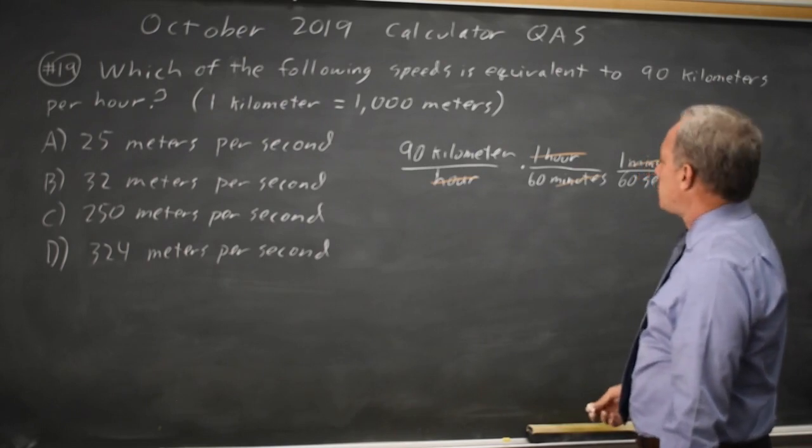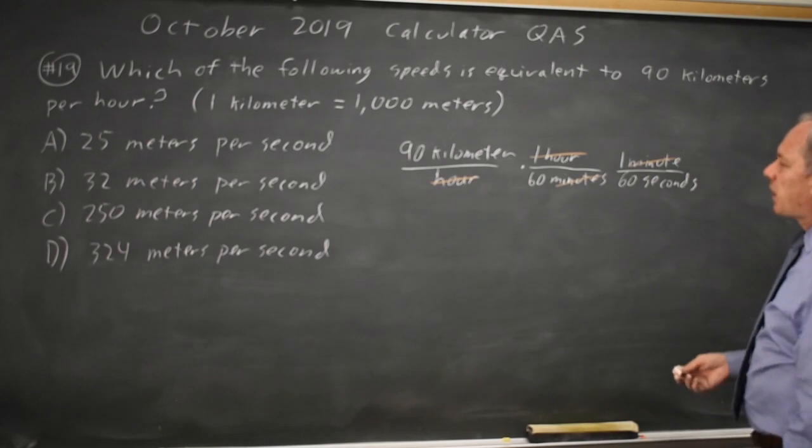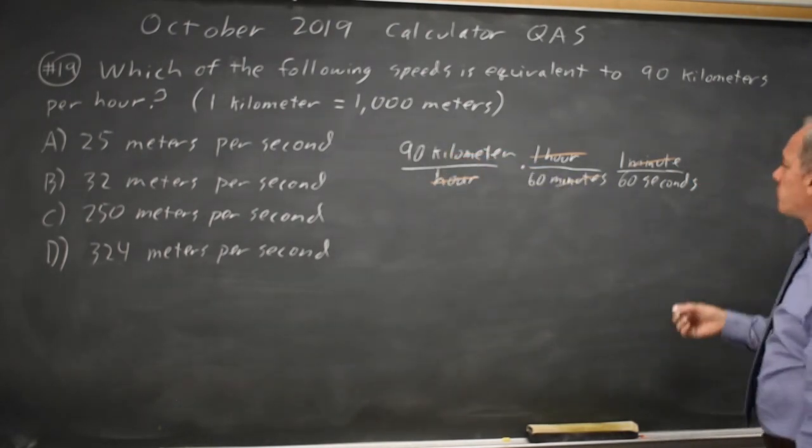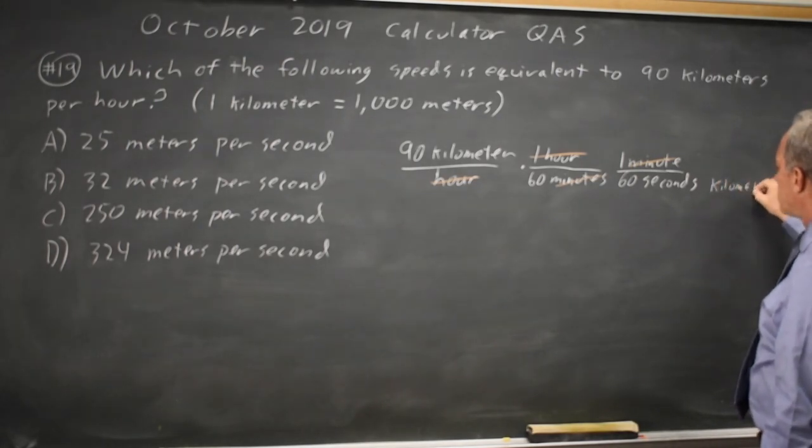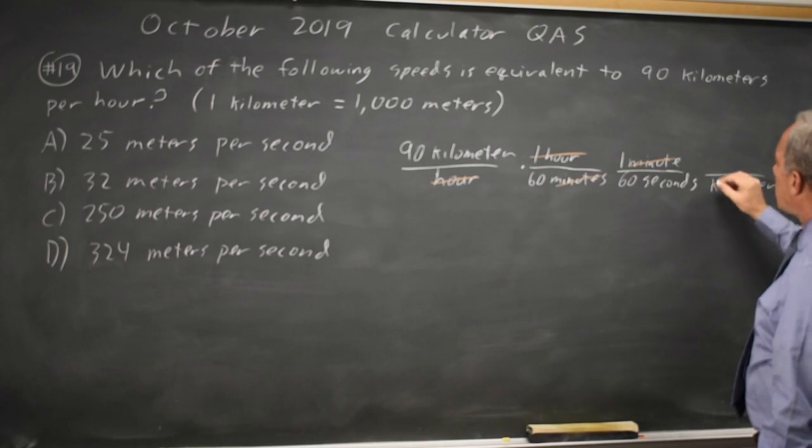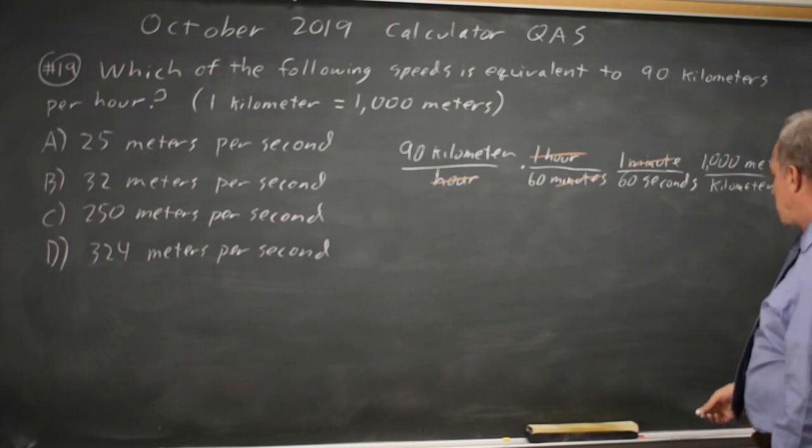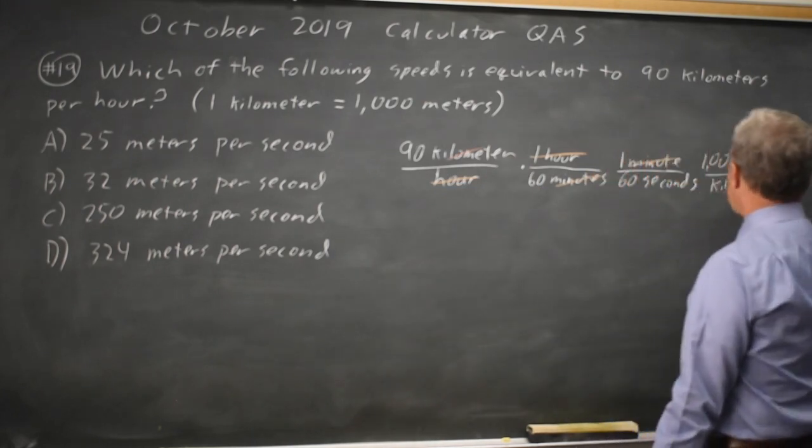And that gives me kilometers per second, but I want meters per second. And since kilometers is in the numerator, I want to cancel it out. I'm going to put kilometers in the denominator. And 1,000 meters is equal to one kilometer. So again, this fraction is one. I can cancel kilometers.